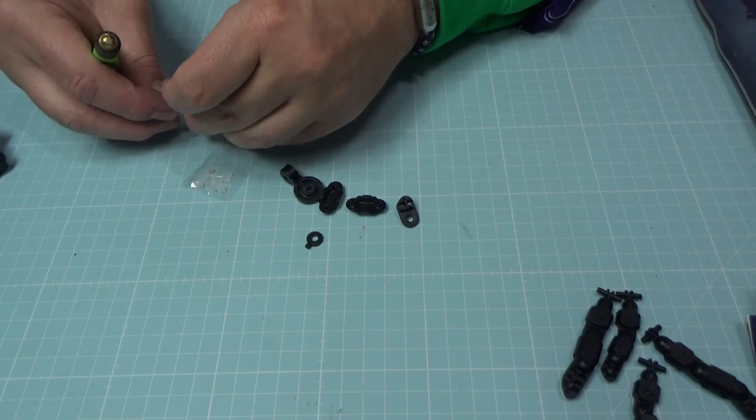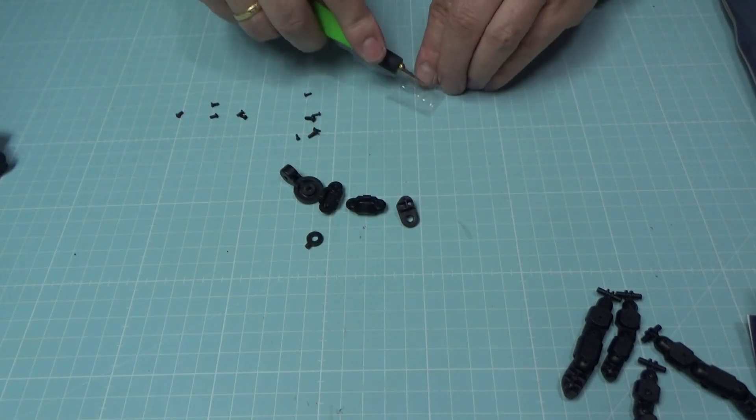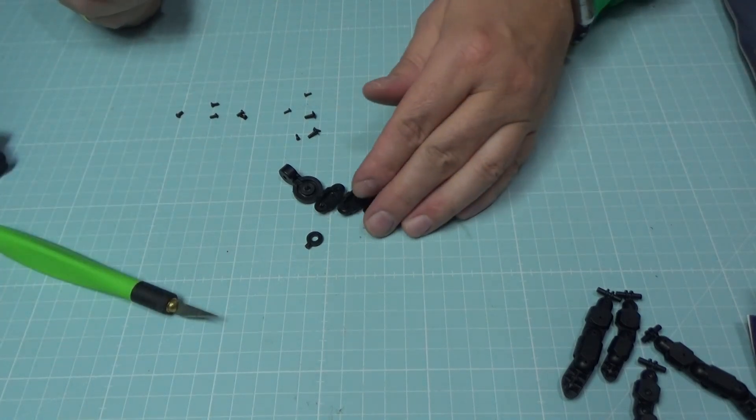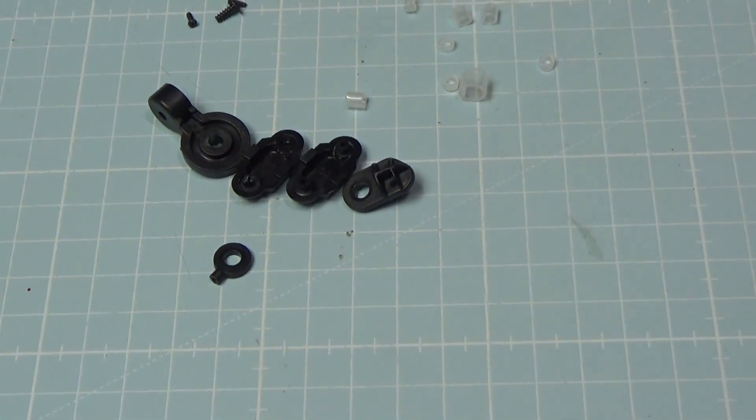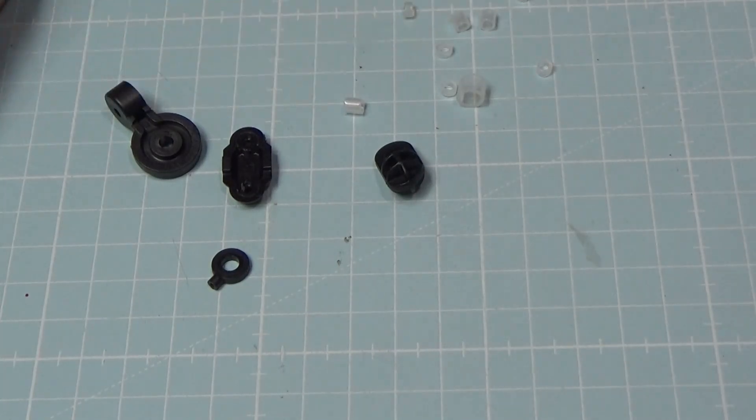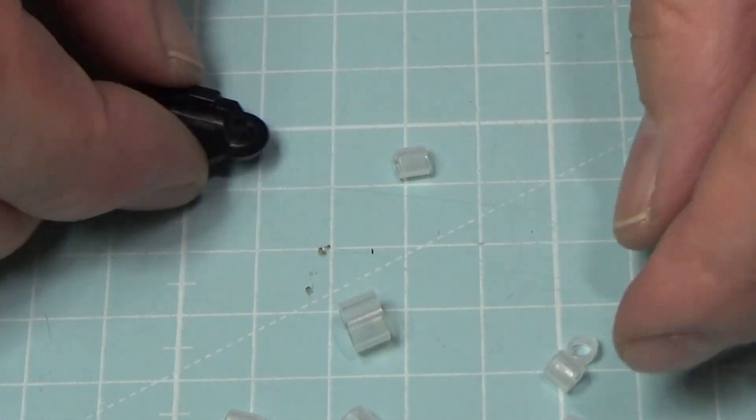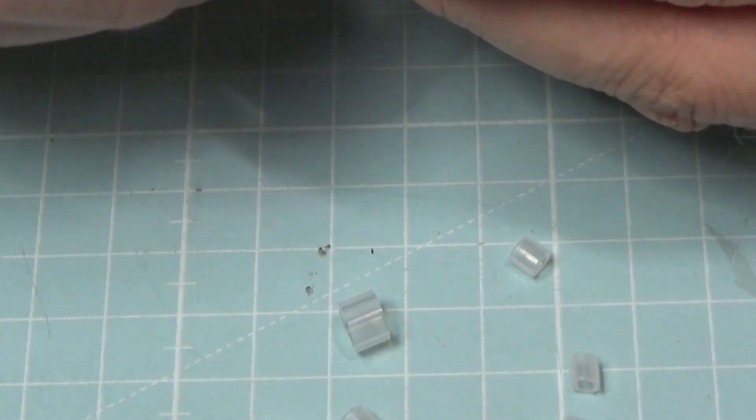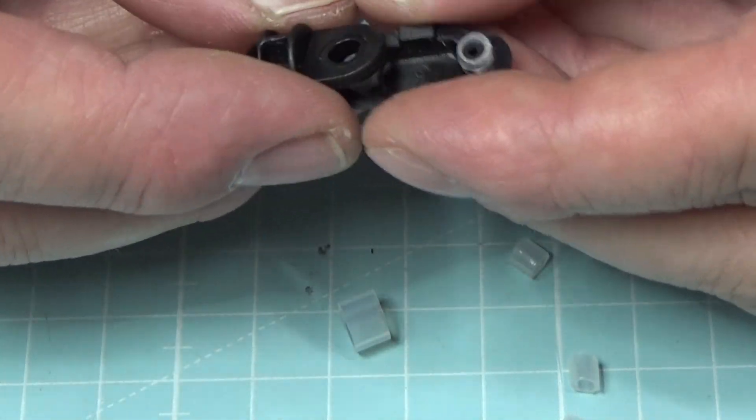Gleich mal hier für Ordnung sorgen und die schon mal rausholen, damit wir da nachher gar nicht lange mit rumeiern müssen. Das sind PW1, PW2 und eine andere. Und dann haben wir hier Plastikscheiben, die dann zur Verstärkung dienen, für die Gelenke quasi. Dann scrollen wir mal ein bisschen dichter ran.